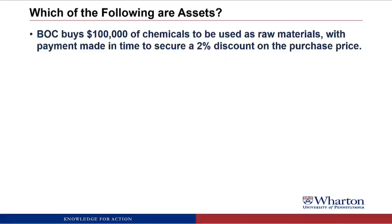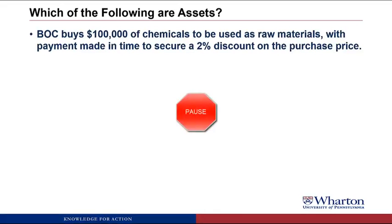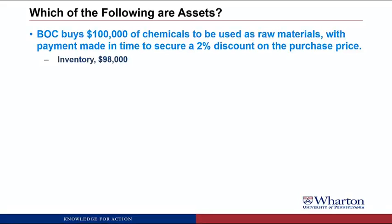BOC buys $100,000 of chemicals to be used as raw materials with payment made in time to secure a 2% discount on the purchase price. This will be an asset because we acquired the chemicals in a market transaction. We will call this asset inventory — the term we use for any product we intend to sell at a higher price. The value of the future benefits is what we actually paid, which is $98,000, not $100,000.